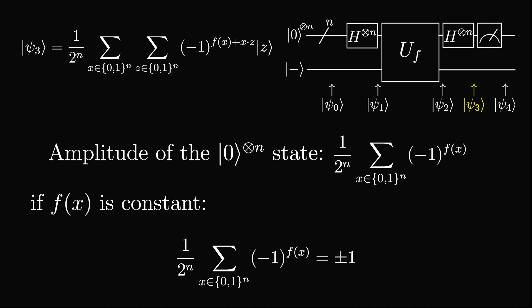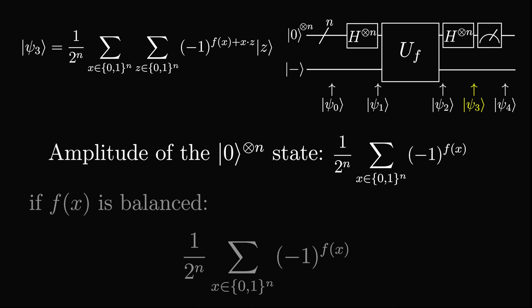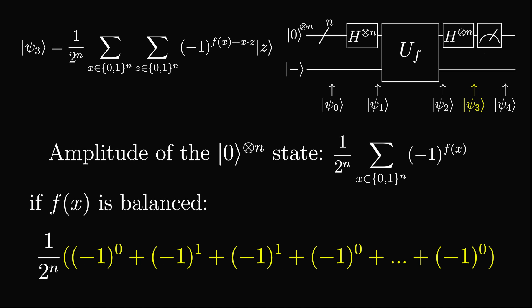On the other hand, if the function is balanced, then if we look at the sum, half of the f of x's will be 0 and the other half 1, meaning that the sum will be 0 when evaluated, as there will be the same number of negative ones as 1's adding together. So if the function is balanced, then the amplitude of the all zero state is 0.